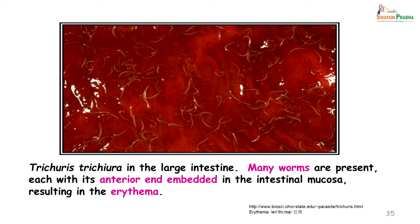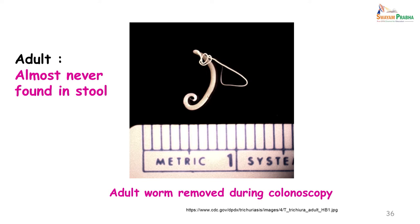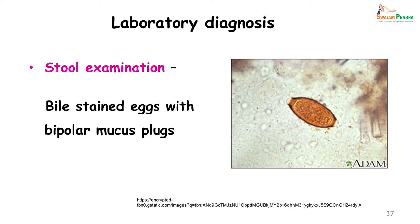The adult worm is almost never found in the stool unless there is rectal prolapse. This is a picture of an adult worm removed during colonoscopy — you can see why it is called a whipworm. Laboratory diagnosis is done by stool examination. You look for bile-stained eggs with bipolar mucus plugs. When looking for bile-stained eggs you usually do it in a saline preparation because you can appreciate the yellowish-brown colour, whereas iodine preparation may interfere with your interpretation.